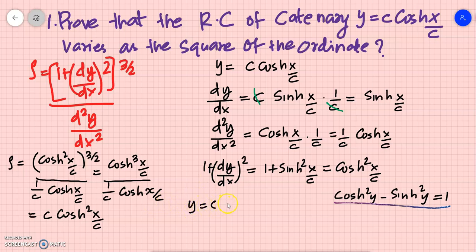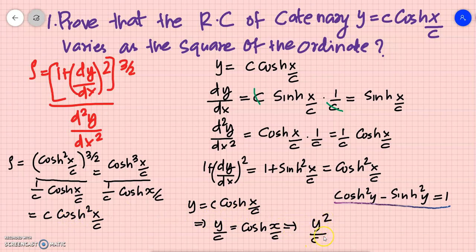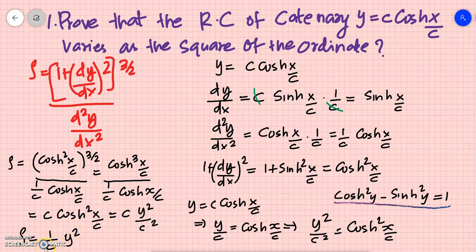Since y = c·cosh(x/c), we get y/c = cosh(x/c), so cosh²(x/c) = y²/c². Substituting: rho = c · (y²/c²), so c cancels and rho = y²/c. Therefore rho equals (1/c)·y².